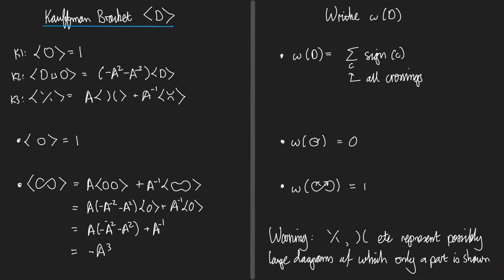Let me remind you about the Kauffman bracket. It's an invariant of diagrams, characterised by the fact that it doesn't change under smooth deformations of the diagrams, and that it satisfies three axioms: K1, K2, and K3. K1 tells you that if you take this standard diagram of the unknot, the Kauffman bracket is one. K2 tells you that if you take any diagram D and place next to it a diagram of the unknot, you get the Kauffman bracket of D times a big factor.